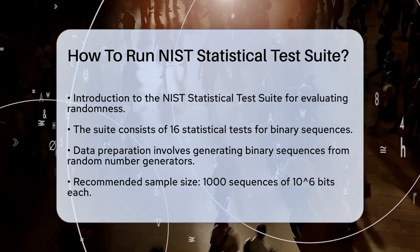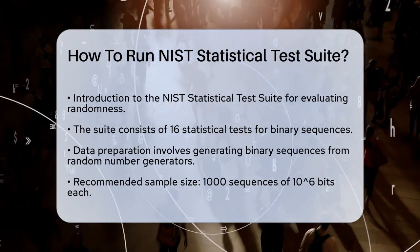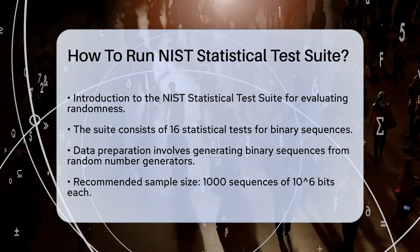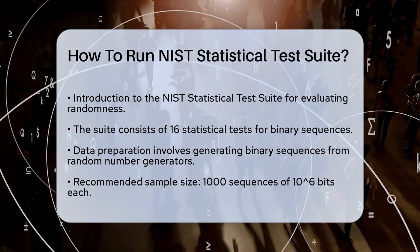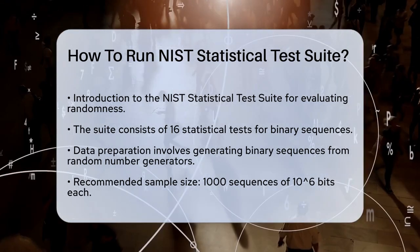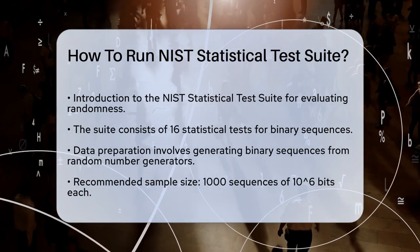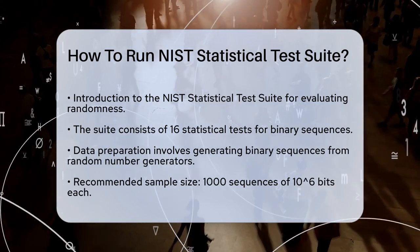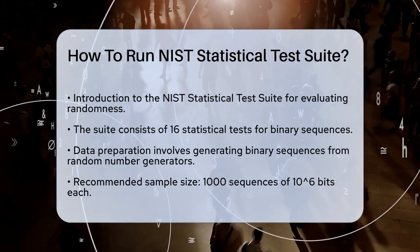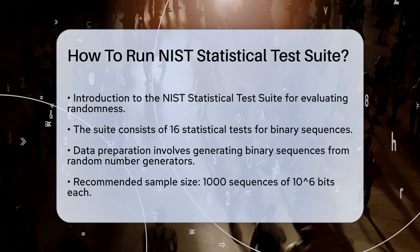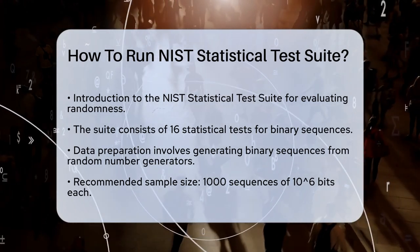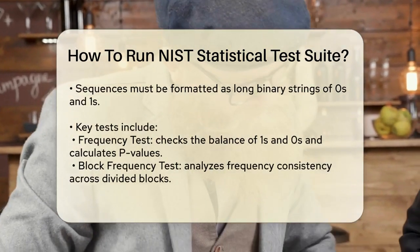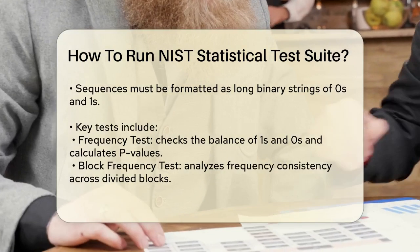To start, you'll need to prepare your data. The tests require a set of binary sequences, which can be generated from your random number generator. For example, you might use 1,000 samples of 10^6-bit sequences for each test. Ensure your sequences are in the correct format — each sequence should be a long binary string of zeros and ones. The NIST Suite typically works with sequences of a specific length, such as 10^6 bits.